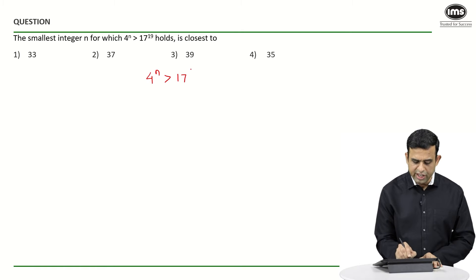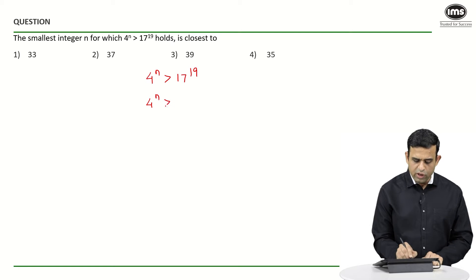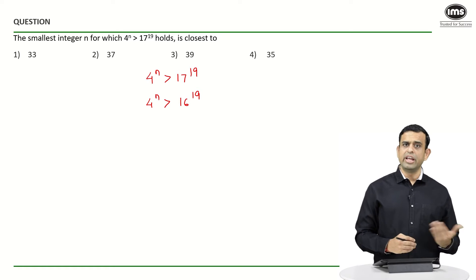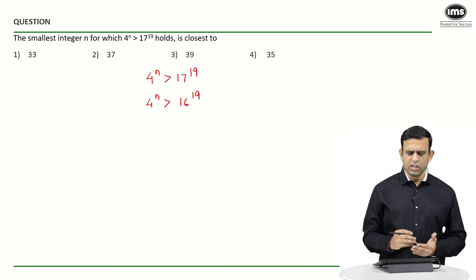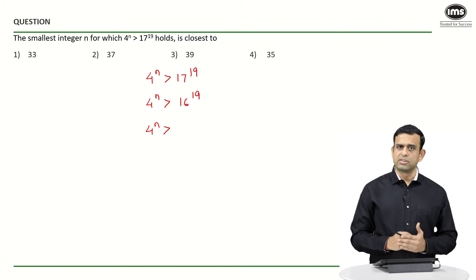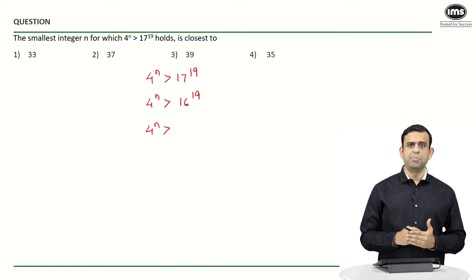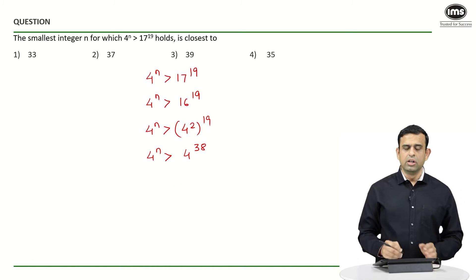If the question says 4^n needs to be more than 17^19, can we also say that 4^n is going to be more than 16^19? Yes, because 17^19 will always be more than 16^19, since 17 is more than 16. Now, can we write 16 in terms of a power of 4? Yes — 16 is 4 squared, so 16^19 becomes (4²)^19 = 4^38.